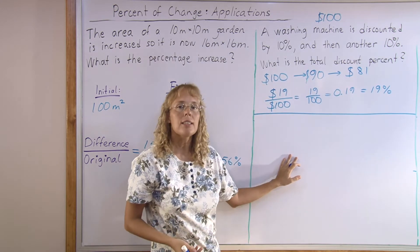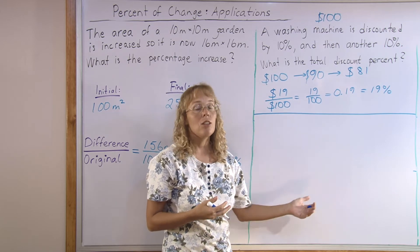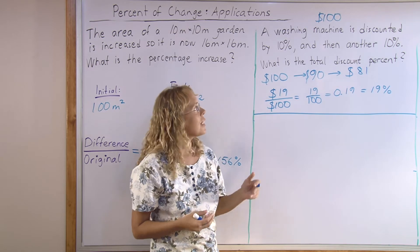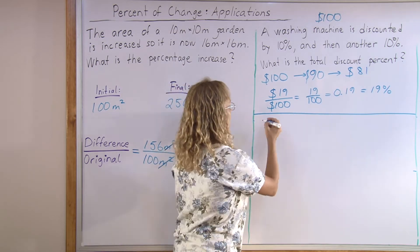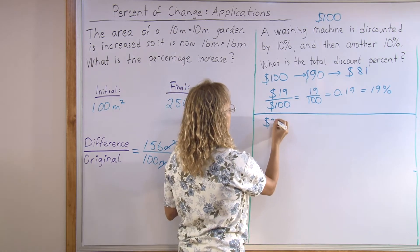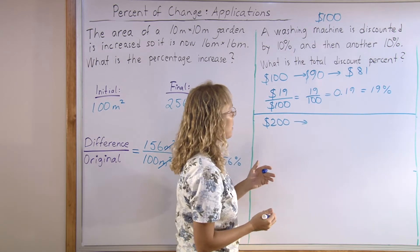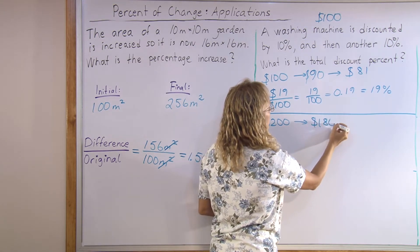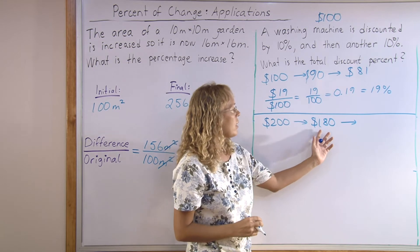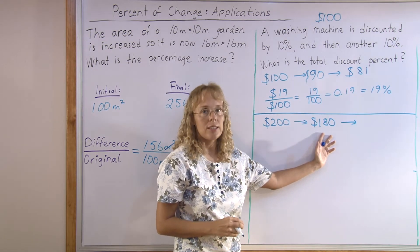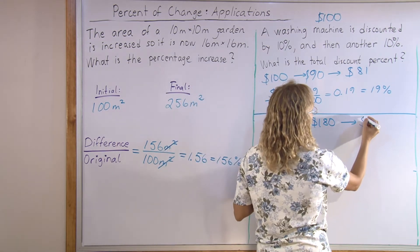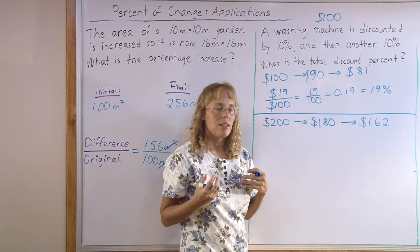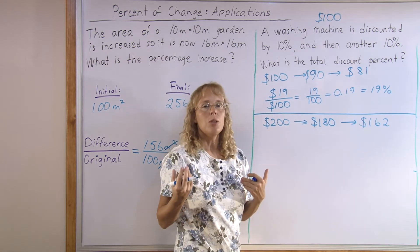Now, I want to show you that this answer does not depend on the price. Let's choose another price for the same washer. Let's say that it costs $200 at first. Then, we discount it by 10%, which is $20, and we get $180. And we discount it the second time. Now, 10% of this price is $18. So, we subtract again and get $162.